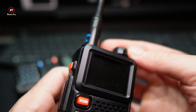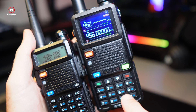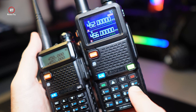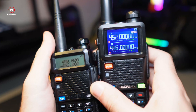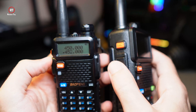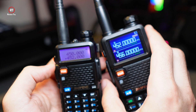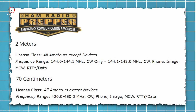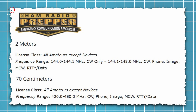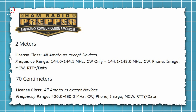How to use it? It's simple. Using the amateur band, punch in the same frequency number on two different devices and use the push-to-talk button to start communicating. Listen for some time first to ensure the frequency is not already in use. Make sure you find out what the amateur band is in your country, as it can vary. For example, in the United States, amateur bands are from 144 to 148 MHz and from 430 to 450 MHz.